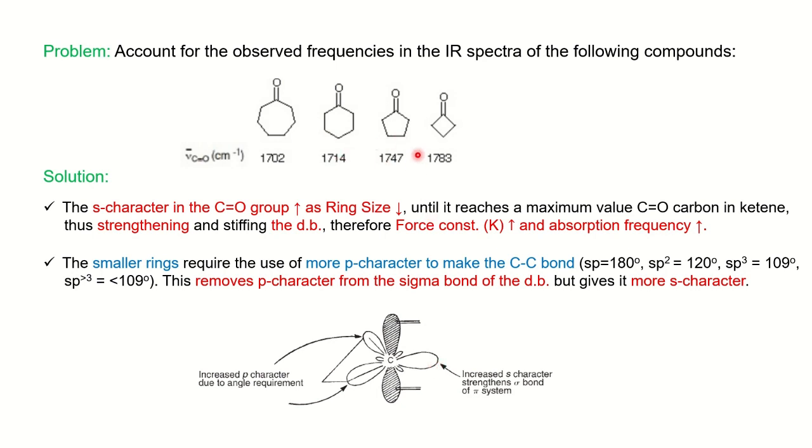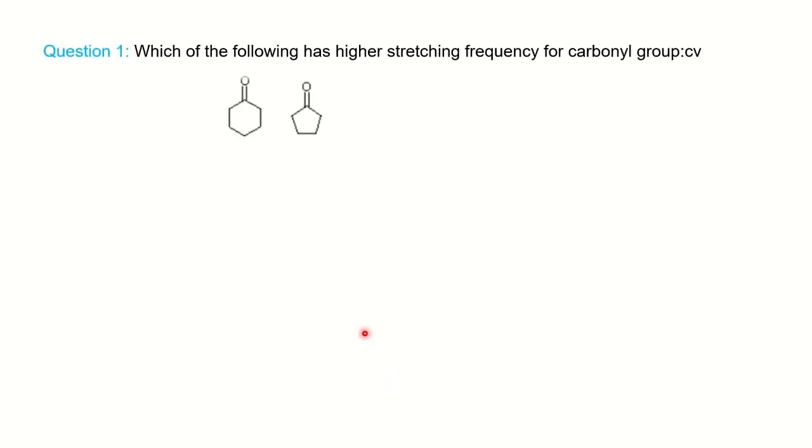This strengthens the sigma bond of the pi system. This is the explanation you can give whenever questions come based on ring size. You can explain the answer based on s-character and reducing of the p-character from the double bond.